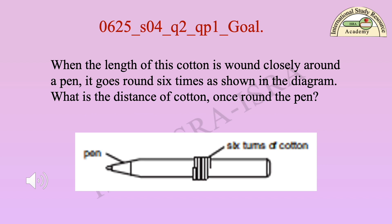Look at the goal of this question. When the length of cotton is bound closely around a pen, it goes round six times. What is the distance once round the pen?